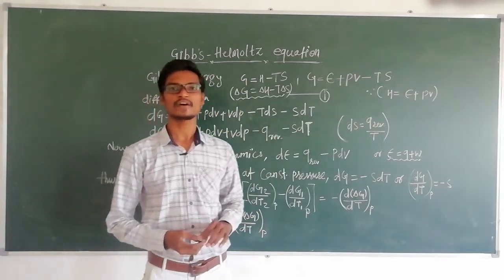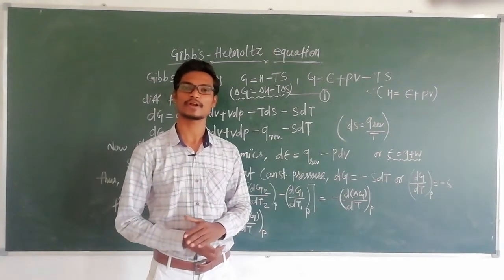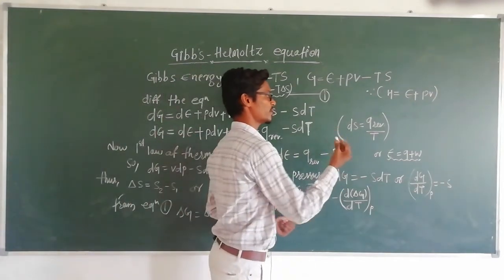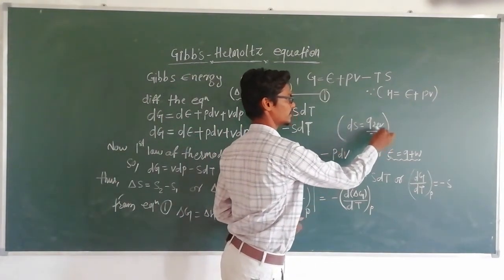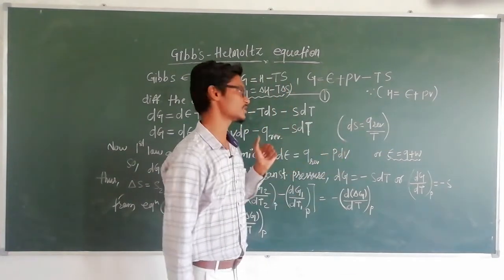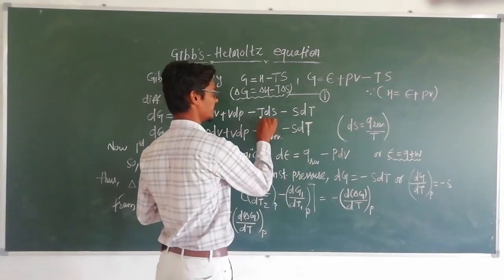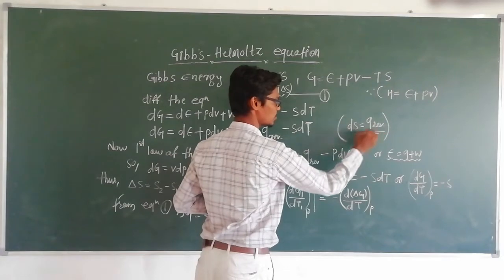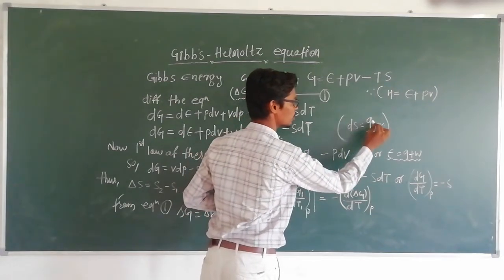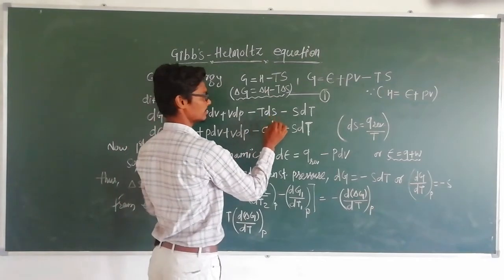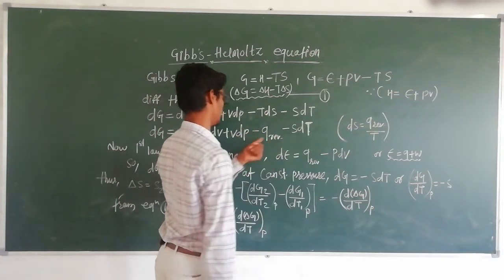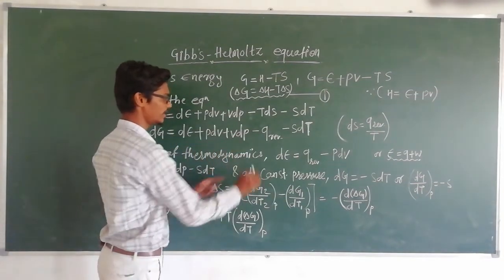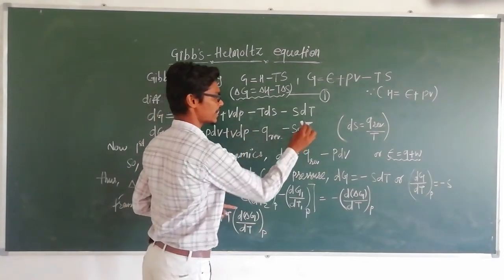We know that the formula for entropy is dS equals Q_reversible divided by T. Since the process is reversible, rearranging gives T dS equals Q_reversible. So in place of T dS we substitute Q_reversible, giving DG equals DE plus P dV plus V dP minus Q_reversible minus S dT.